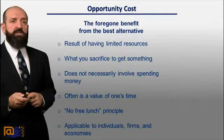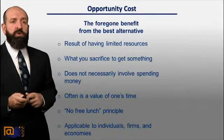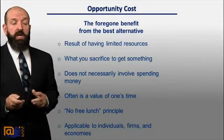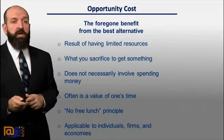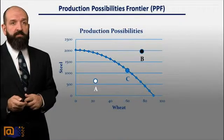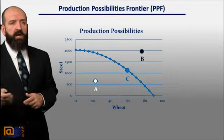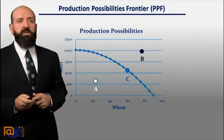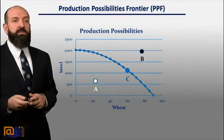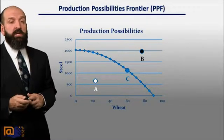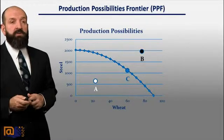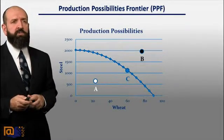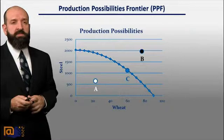The opportunity cost principle applies to both individuals, firms, and actually whole economies or countries. For a country, this principle can be represented in a graph known as the production possibilities curve, or production possibilities frontier.